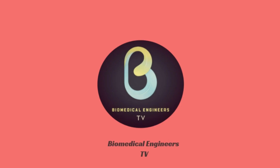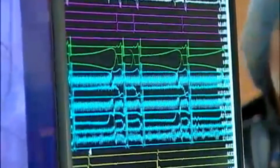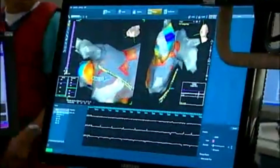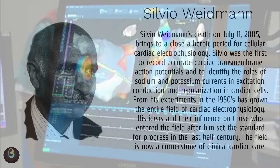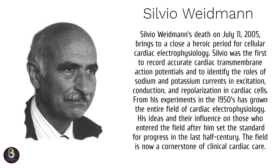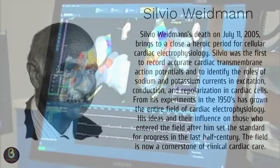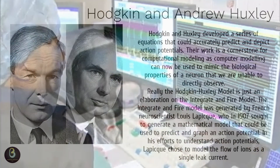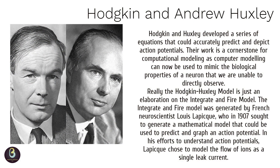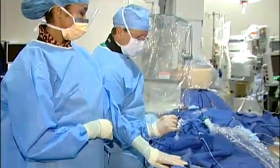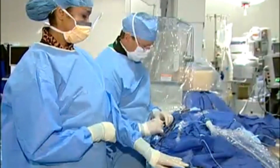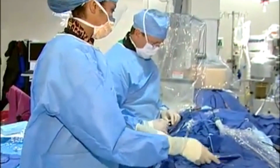Let's start the video by looking into the beginning of heart electrophysiology. Evidence for the cardiac muscle being a functional syncytium were published in 1952 by Silvio Weidmann, the father of cardiac cellular electrophysiology. In the same year, Hodgkin and Andrew Huxley demonstrated in a squid axon how channels open and close and how ions travel through these channels. This work was rewarded with the Nobel Prize in 1963.